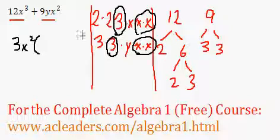Okay, and how do we do this? So I will put the 3x squared outside here. I will open the bracket. Now, 12x cubed I will divide by 3x squared. 12 divided by 3 is 4. x cubed divided by x squared is just x. That's it.